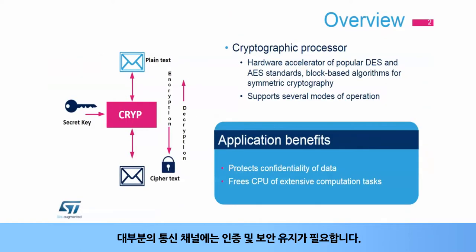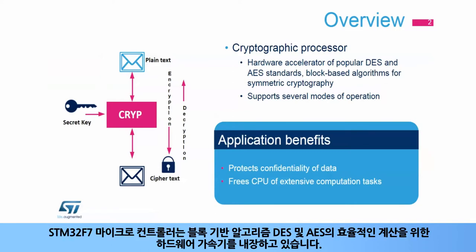Authentication and confidentiality are required for most communication channels. Cryptography is then widely used, but is very demanding in terms of processing for a CPU. STM32F7 microcontrollers embed a hardware accelerator for the efficient computation of block-based algorithms, DES and AES.